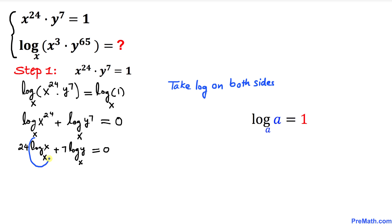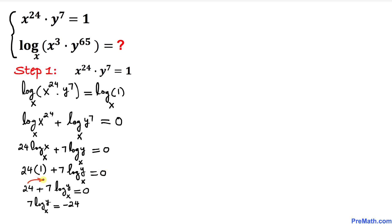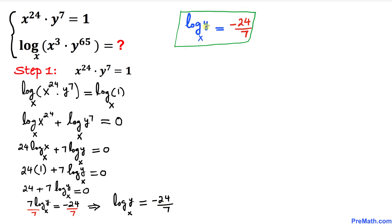We know that log base x of x is always equal to 1, since the argument and base are the same. So the left hand side becomes 24 times 1 plus 7 times log base x of y equals 0. Moving 24 to the right hand side gives negative 24. Dividing both sides by 7, we get log base x of y equals negative 24 over 7.